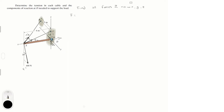For F, we know it's zero in the i direction, plus 400 sine(30) in the j direction — that's the y component of this force — and then minus 400 cosine(30) in the k direction — that's the z component of this force.